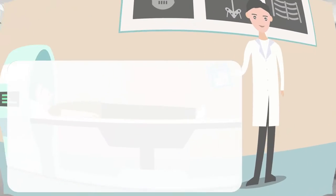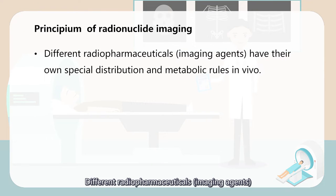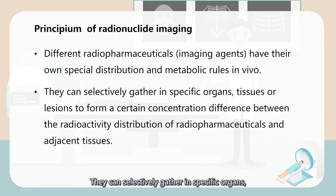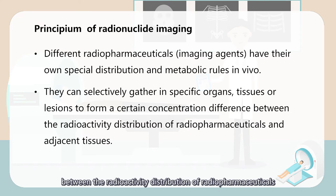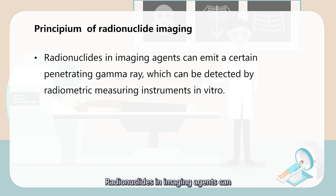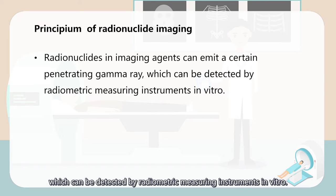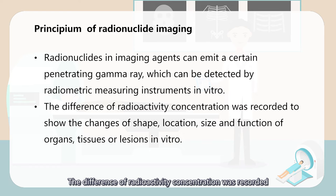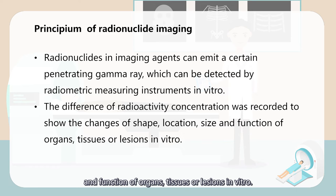Principium of radionuclide imaging: different radiopharmaceuticals, which we call imaging agents, have their own special distribution and metabolic rules in vivo. They can selectively gather in specific organs, tissue, or lesions to form a certain concentration difference between the radioactive distribution of radiopharmaceuticals and adjacent tissues. Radionuclide imaging agents can emit a certain penetrating gamma ray, which can be detected by radiometric measuring instruments in vitro. The difference in radioactivity concentration is recorded to show the changes of shape, location, size, and function of organ, tissue, or lesions in vitro.